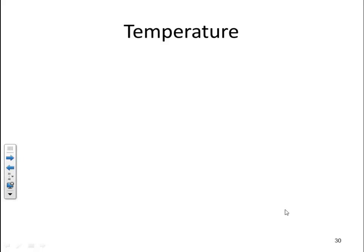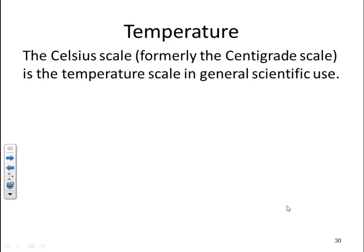We have several temperature scales that we're going to cover. The first is the Celsius scale, formerly the centigrade scale. It's a temperature scale in general scientific use. The freezing point of water on this Celsius scale is 0 degrees C, and the boiling point of water is 100 degrees C.